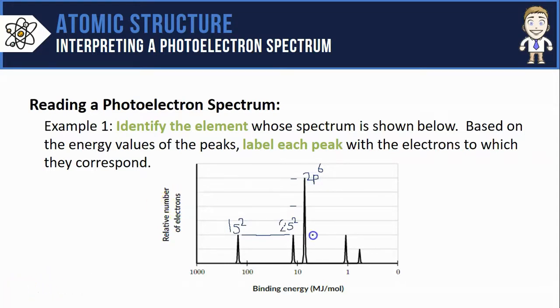The fourth peak is equal in height to the first two, meaning it also contains two electrons like they did, so this one is probably the 3s orbital also containing two electrons. This means that my final peak must correspond with some additional electrons in the 3p orbitals. Since it's only half the height of the other peaks that contain two electrons, that means my 3p orbitals for this element must only contain one single electron.